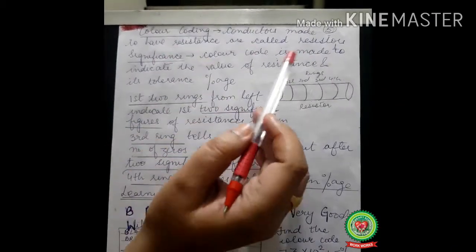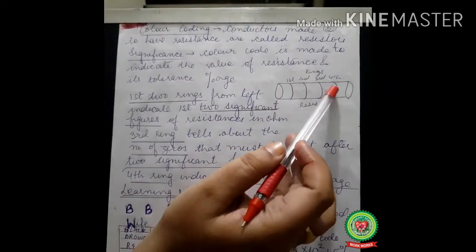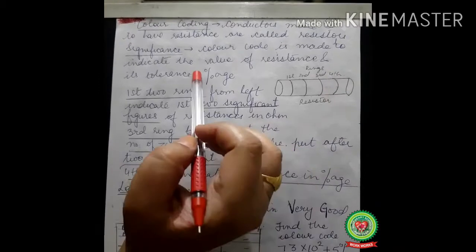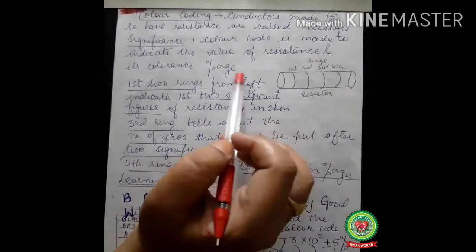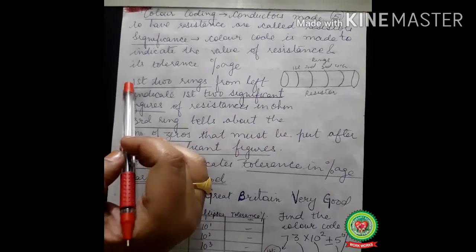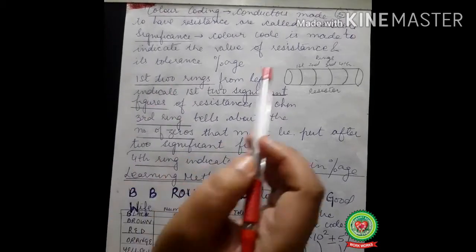Color coding is made to indicate the value of resistance and its tolerance power - how much the resistance is and how much tolerance power it has. If temperature is increased or decreased, we should know how much the resistor can tolerate. The first two rings give us two significant figures, and the third ring gives us the number of zeros.